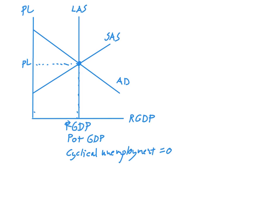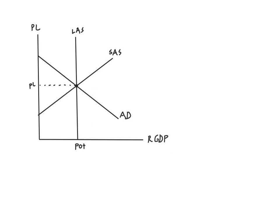So now we have the basic framework for the model. What's left is for us to focus on each of these relationships in turn — LAS, SAS, and AD — in order to find out how to manipulate these relationships and when to manipulate them, all in an effort to determine what happens to our outcome variables: price level and real GDP. We need to examine all of the shift and relationship factors at play in the three relationships and use them to manipulate the model.